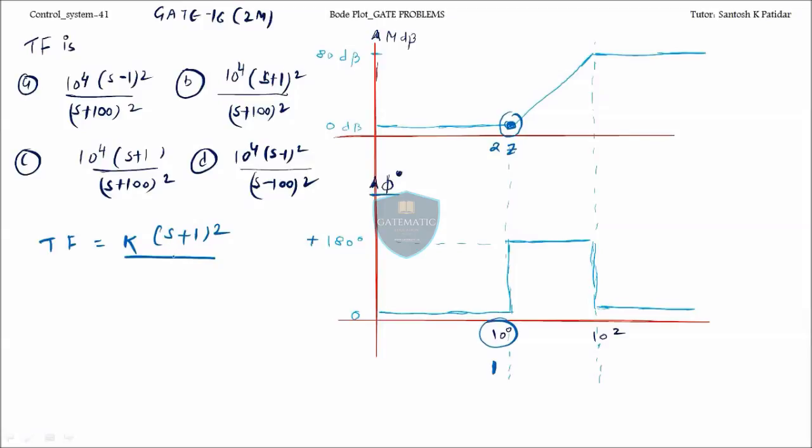So it means two zeros you are getting. This part is over, two zeros. So this one is equal to one. At this point again your slope is changing. Here we are getting minus 180 degree, that's why this is coming to zero degree again. Two poles.